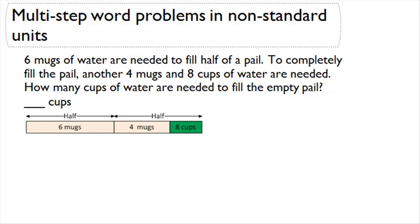The first thing I can think of here is that if six mugs of water are needed to fill half the pail, then I know that if I was trying to fill this with mugs, I would say six mugs times two would equal twelve mugs, because that would be the two halves, and that would be the full pail. So I would need twelve mugs to fill the pail.